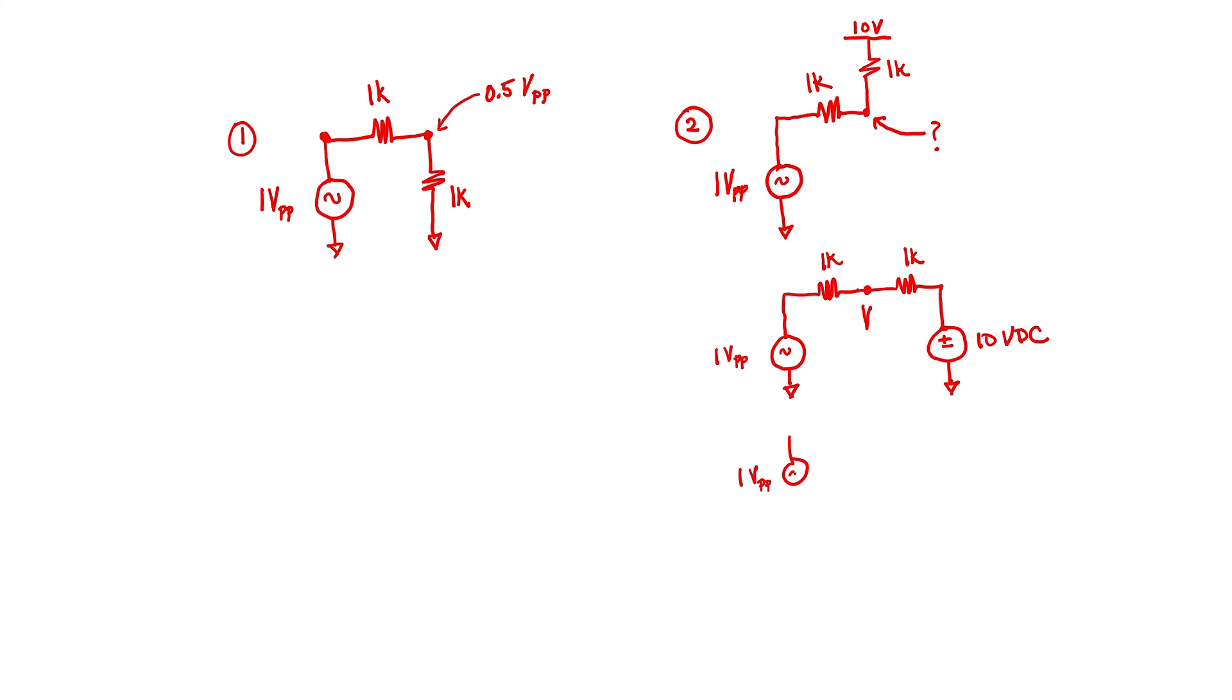First, let's find the contribution at the output side due to the AC source. I can ground my DC source, can't I? That's the principle of superposition. Voltage V due to the AC source is just what it was in example one, a half a volt, peak to peak. It's an AC signal.